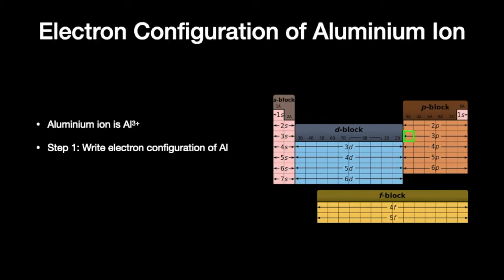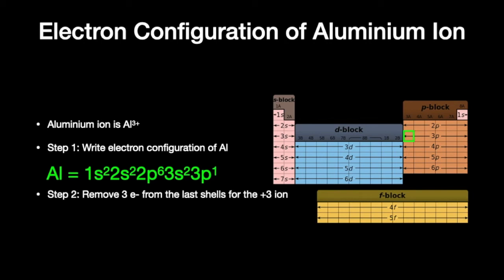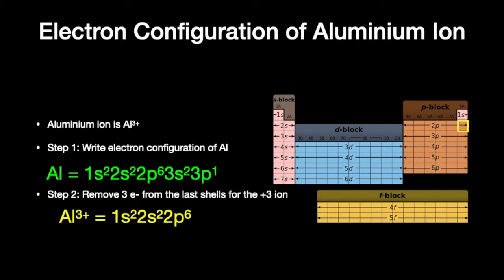Now how about aluminum ion, Al3+? It's in group 3 of the periodic table. The electron configuration shows 1s2, 2s2, 2p6 — a filled n=1 and n=2 shell — and then extra electrons in the n=3 shell that don't completely fill it: 3s2 and 3p1. To form a plus 3 ion, we remove three negatively charged electrons: two from the s orbital and one from the p orbital. This gives the electron configuration for aluminum ion, which is isoelectronic with neon.